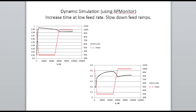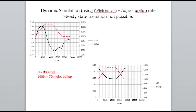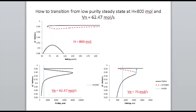On a more negative note, underlining what we said: if we tried to do the same thing by adjusting the boil-up rate instead of the feed rate, AP Monitor predicts exactly what we expected — you end up right back at your low-purity steady state. Looking at the bifurcation graphs, we were moving along the bottom curve, and because these are all stable solutions we just moved along that path.